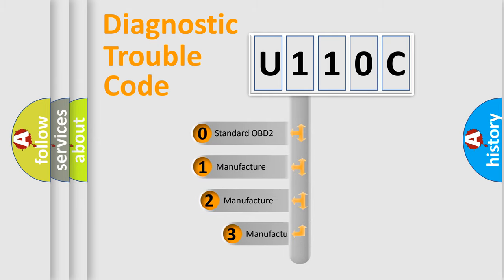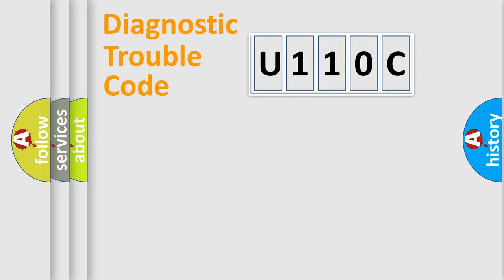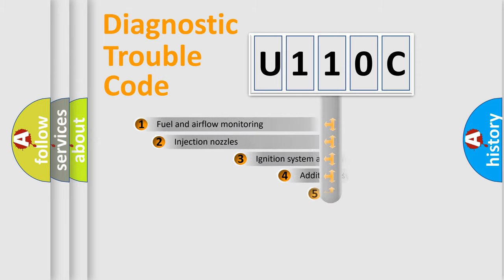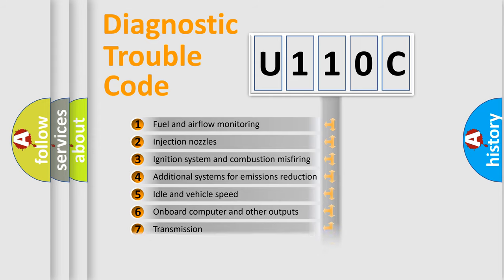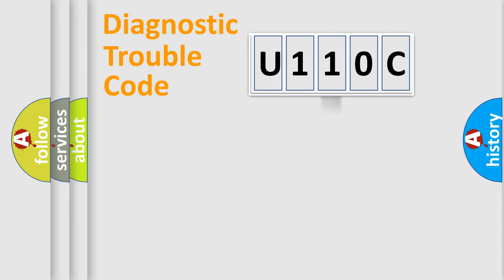If the second character is expressed as zero, it is a standardized error. In the case of numbers 1, 2, 3, it is a manufacturer-specific error. The third character specifies a subset of errors. The distribution shown is valid only for the standardized DTC code.